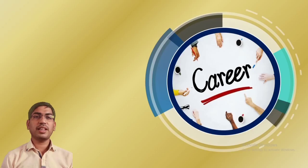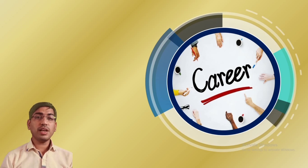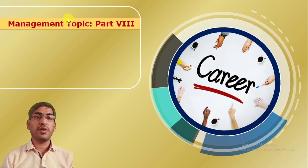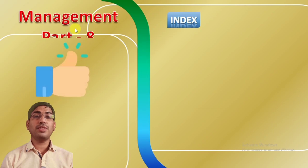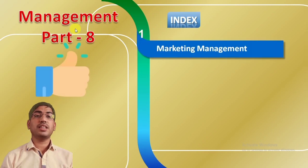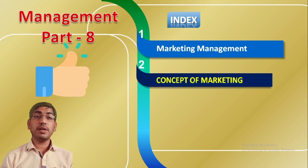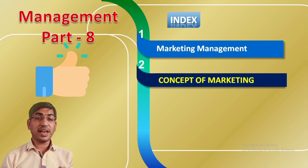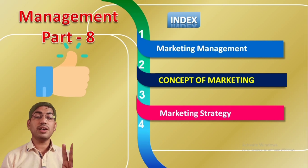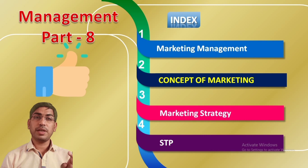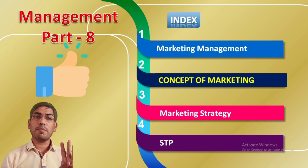In today's session we are going to talk about marketing management and see all the concepts in a better way. We will cover four points: first, the meaning of the term marketing management; second, the concept of marketing management in detail; third, marketing strategy — a consistent strategy followed according to various situations; and fourth, the three pillars of marketing management — S for market segmentation, T for market targeting, and P for market positioning.